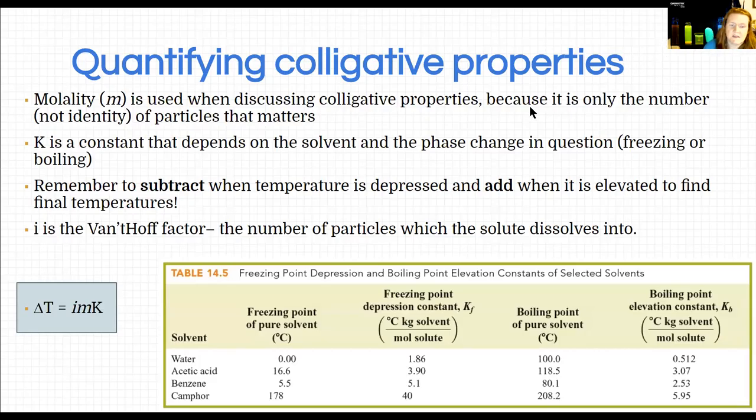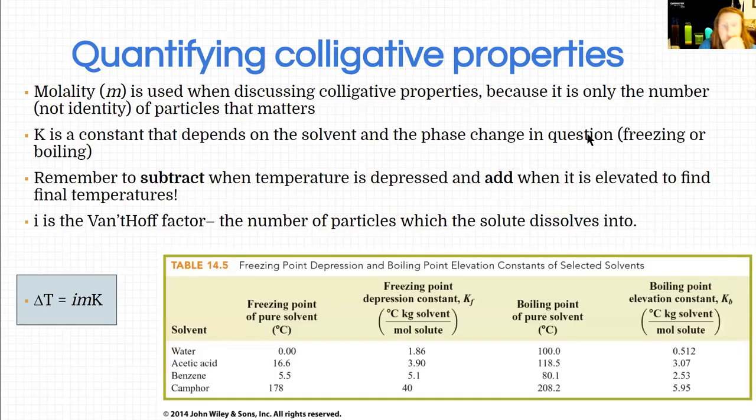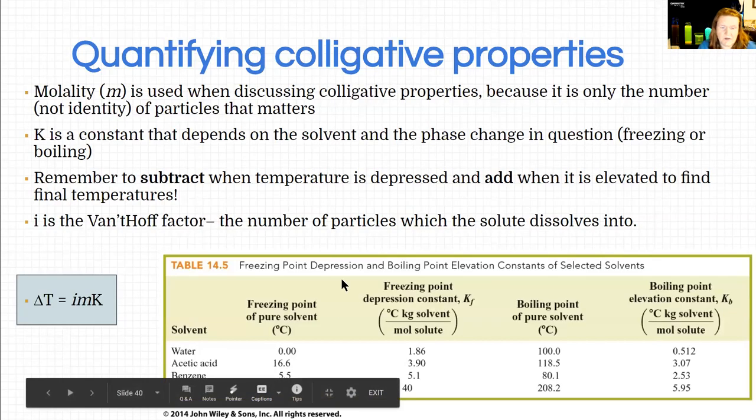And so you can see from these like camphor has a really high freezing point. It's actually solid at room temperature. Because room temperature is 20 degrees Celsius and its freezing point is 178. So anything below 178 and it's going to be a solid.